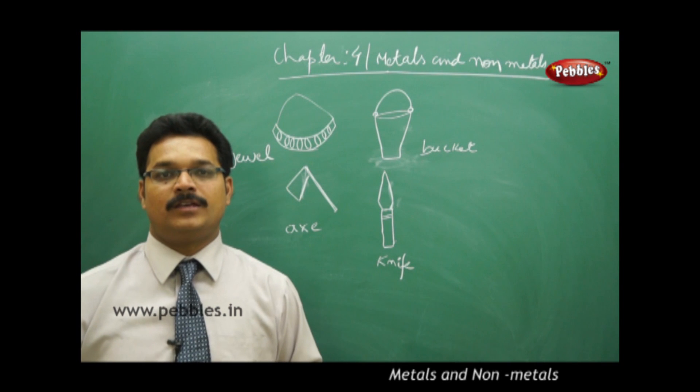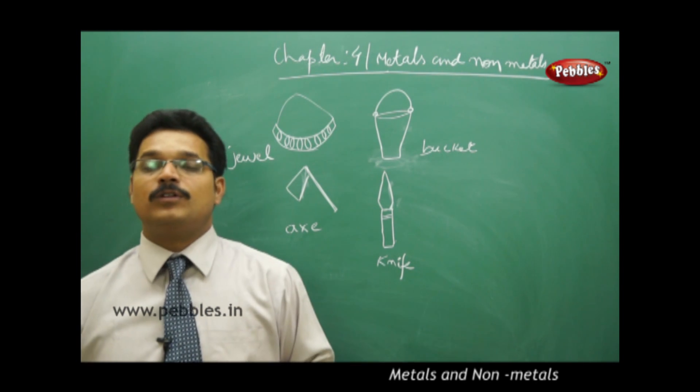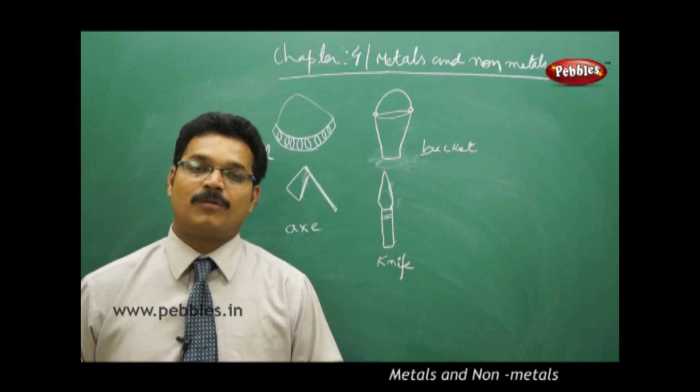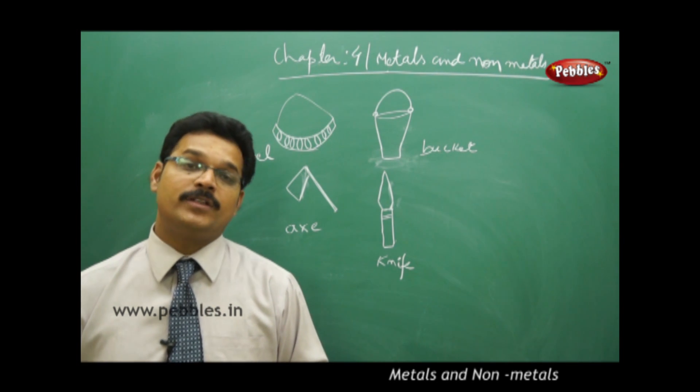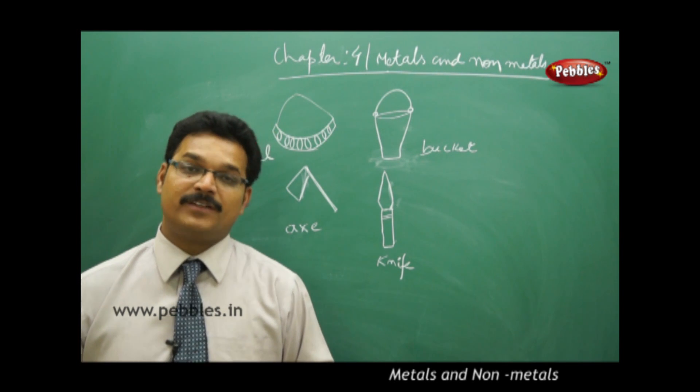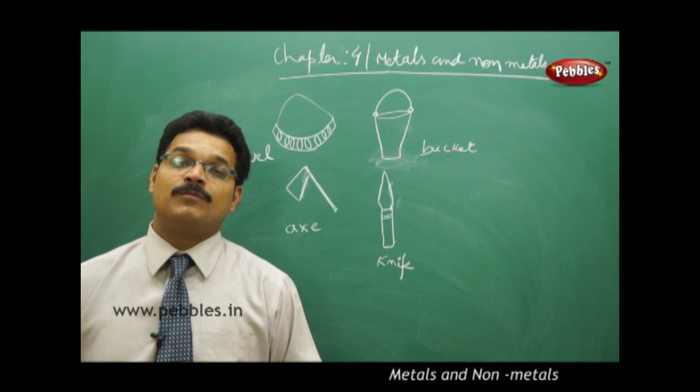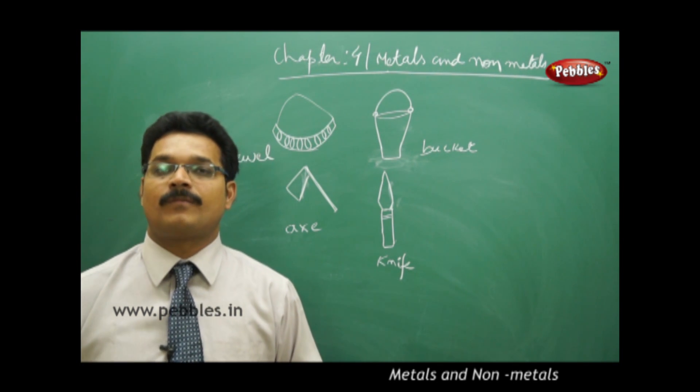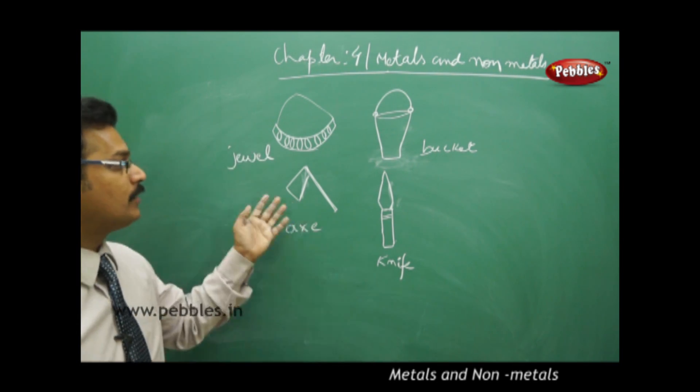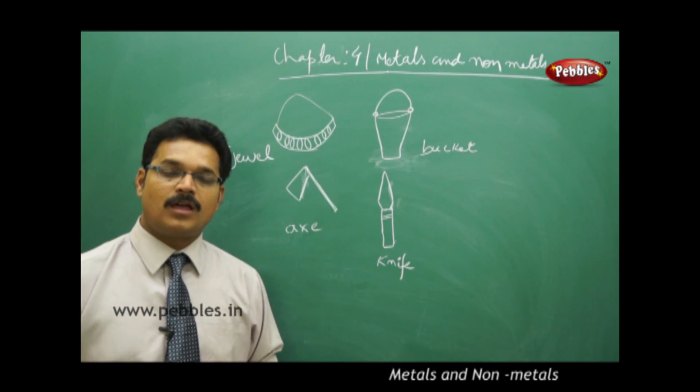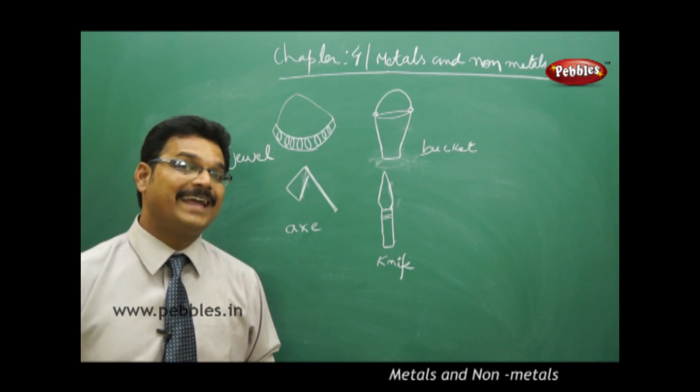You also learned about different natural processes like rusting. In this chapter we'll go in depth into properties of metals and non-metals and how they interact with different substances available in nature. If you observe these diagrams on the board, can you guess